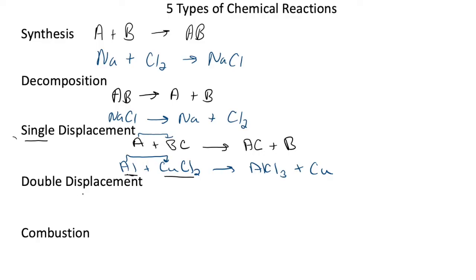With a double displacement, which is our next reaction, the general equation will have two compounds for reactants and two compounds for products. AB plus CD will rearrange to form AD plus CB.